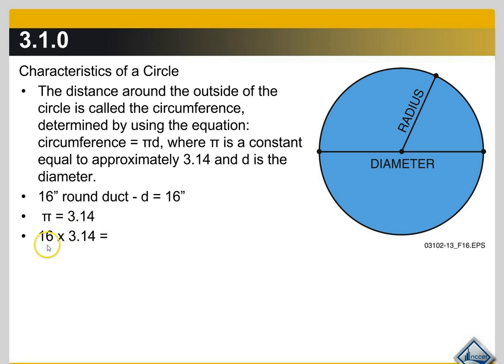So we multiply the diameter of the 16 inch round ductwork times pi. We end up with 50.24 inches. So we know we have 50 inches, but we have .24 inches we need to figure out how many inches that is.